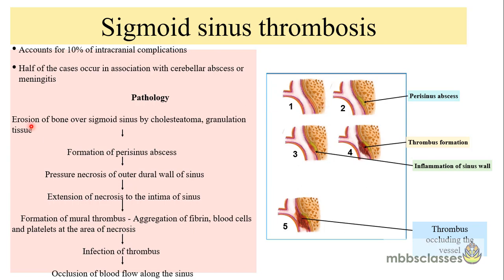The first initiating point of sigmoid sinus thrombosis is the erosion of the bone overlying the sigmoid sinus, either by cholesteatoma or granulation tissue. This leads to formation of a perisinus abscess between the sinus and the bone. Because of this perisinus abscess, pressure necrosis of the outer dural wall of the sinus occurs. When the inflammation of the sinus wall involves the tunica intima, there is accumulation of fibrin, blood cells, and platelets at the site of necrosis, leading to thrombosis formation.